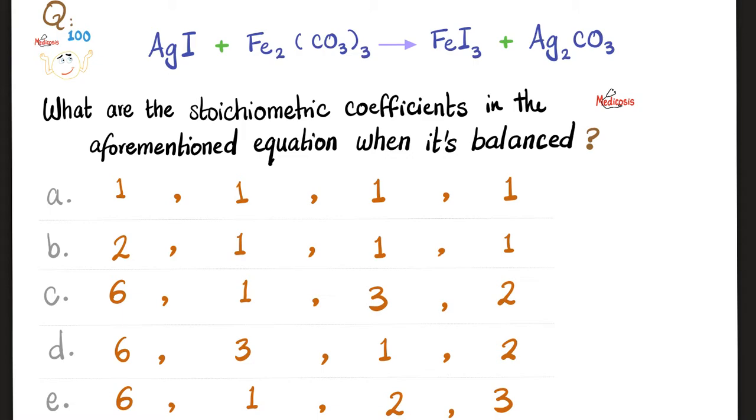Let's start by answering the question of the previous video. What are the stoichiometric coefficients in the aforementioned equation when it's balanced? Please pause and try to answer this yourself. Let's go. First, balance the equation. Let's look at silver. We have one silver atom here and two silver atoms there. How about iron? Two iron atoms here and one iron atom here. As for carbon, we have three carbons here and only one carbon here. We have nine oxygen atoms and three oxygen atoms.